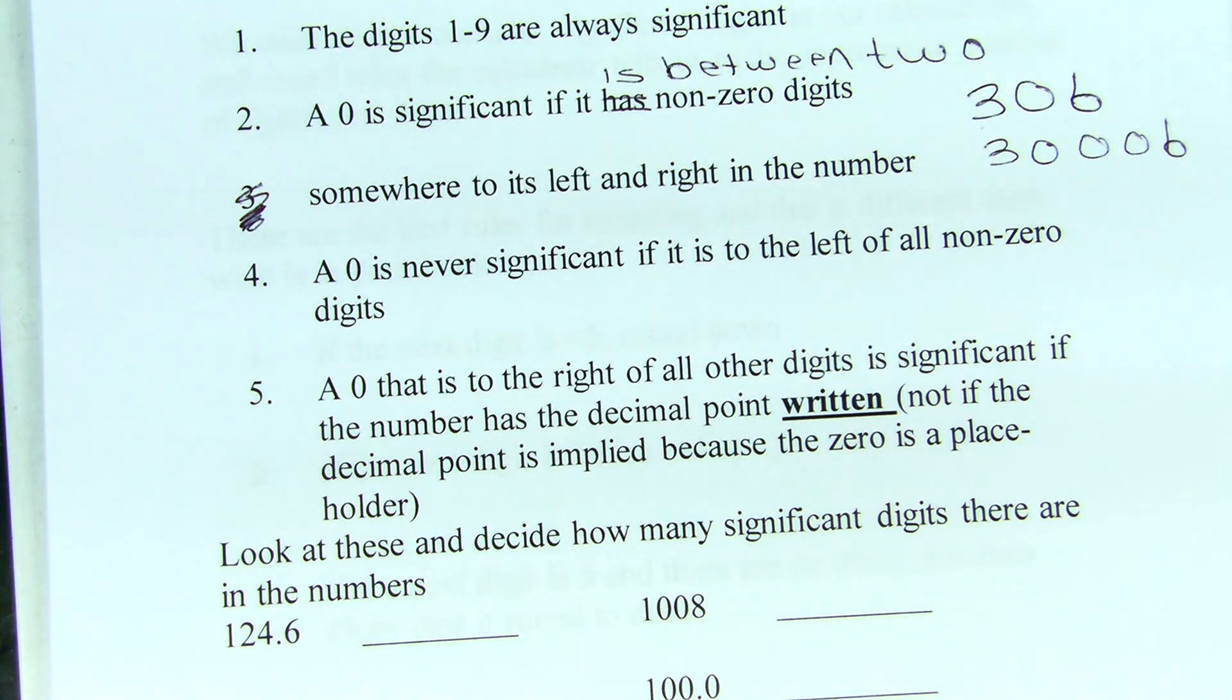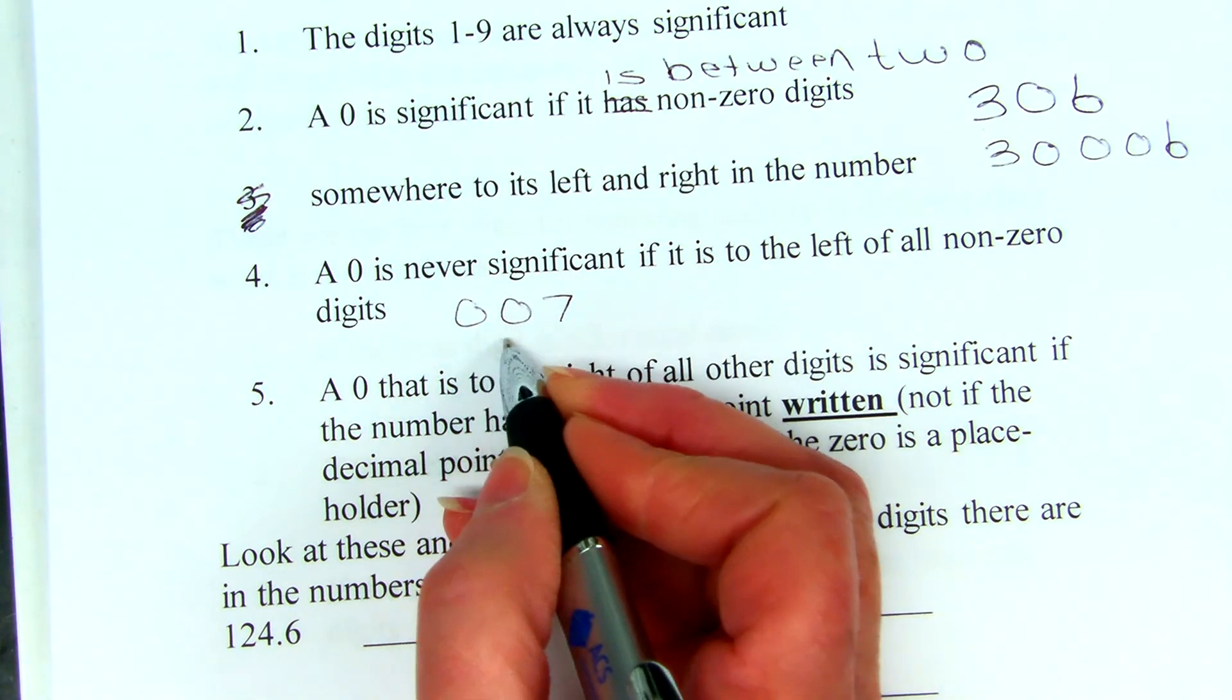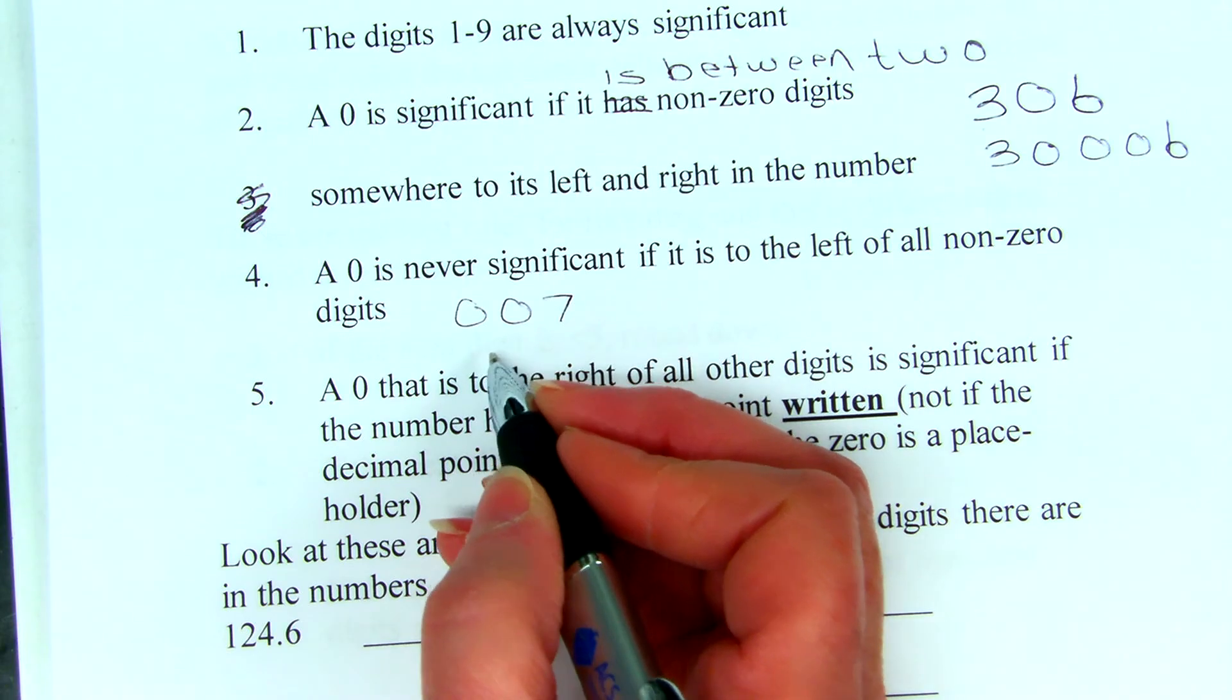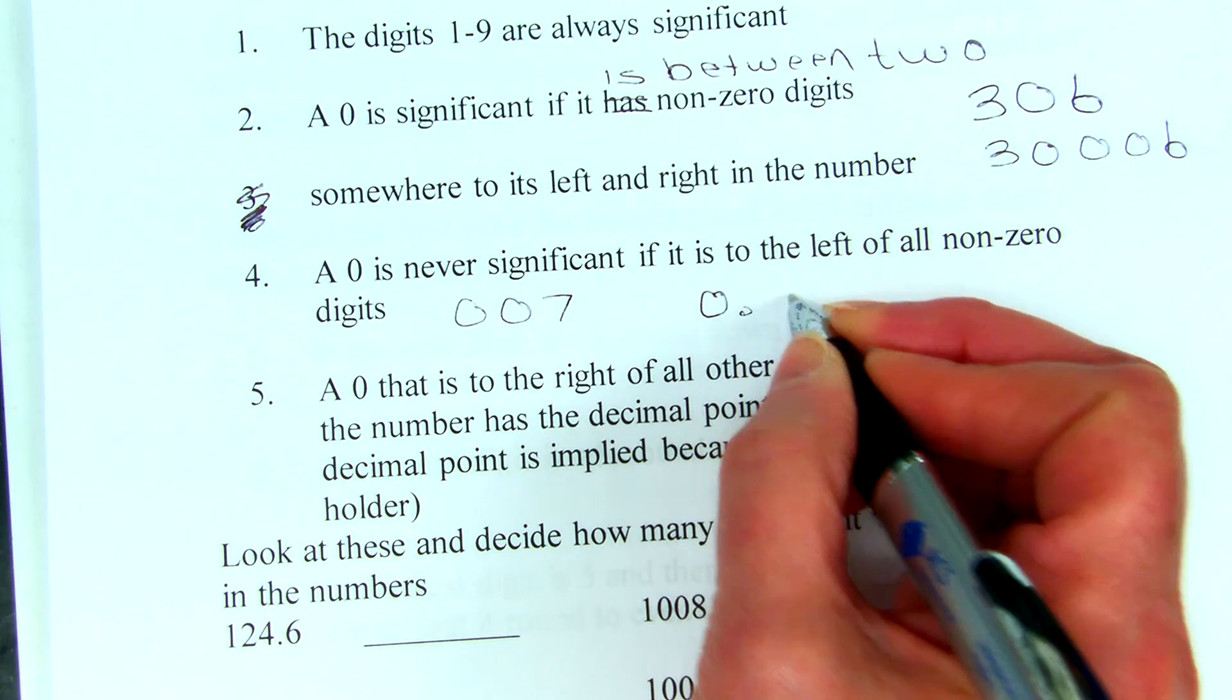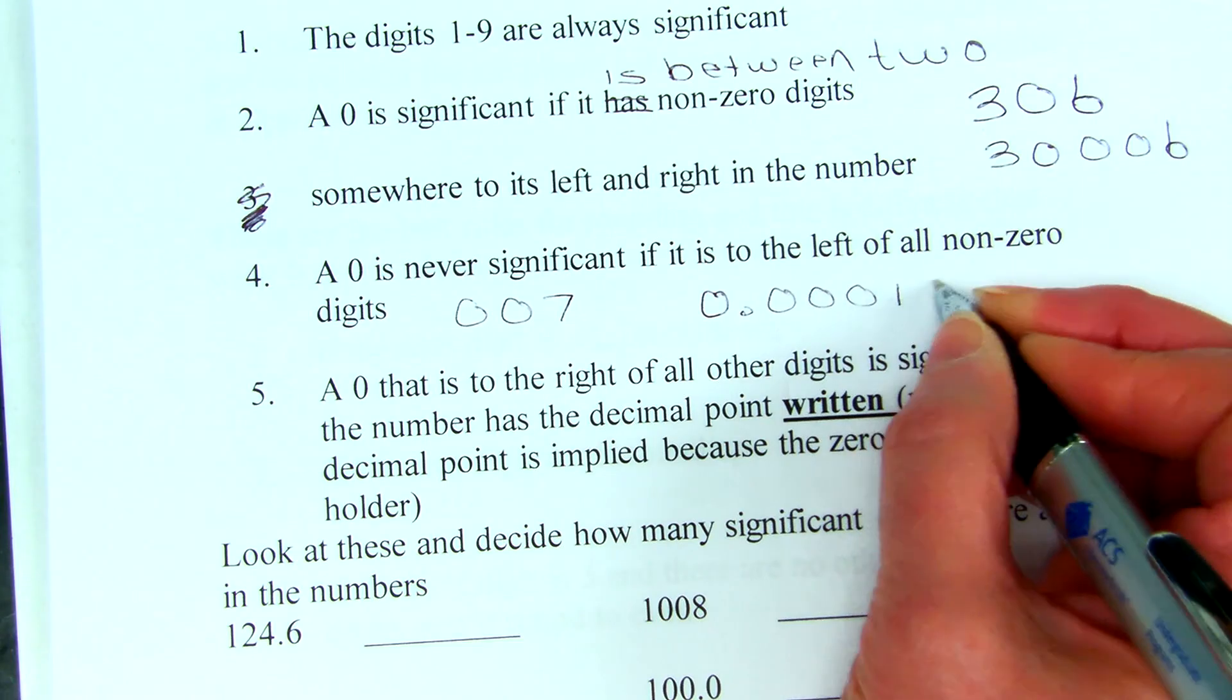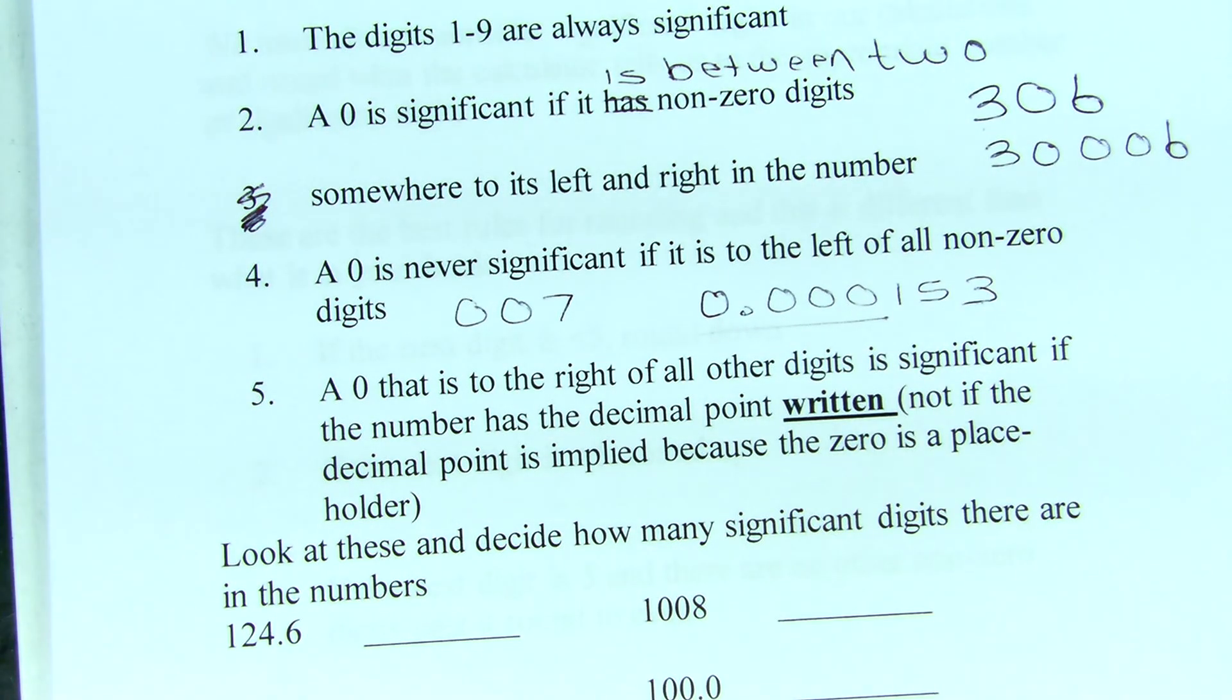A zero is never significant if it's to the left of all the non-zero digits. So, if you have something here like James Bond 007 these leading zeros are not significant. They are just holding places. Even if we have something like 0.000153 all of these zeros to the left of the non-zero digits are not significant zeros.